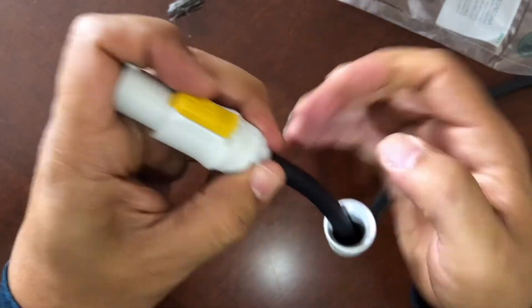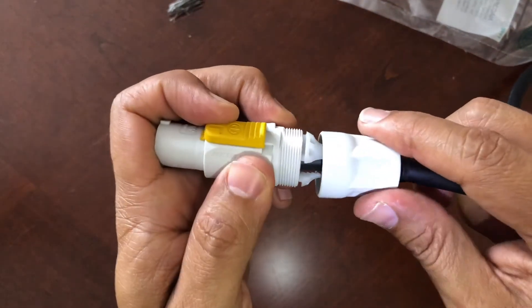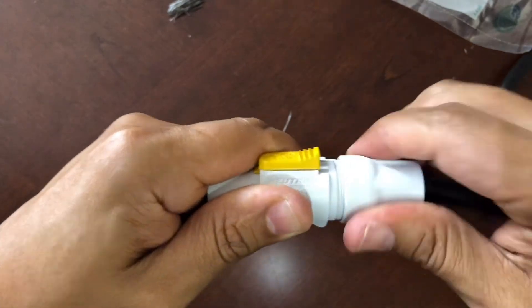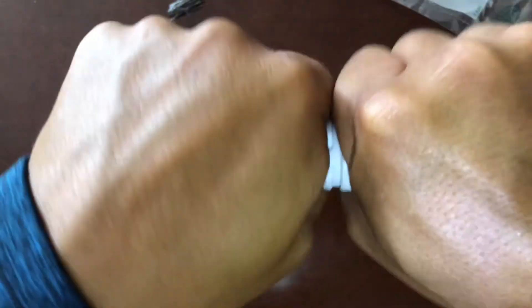Once you do that, the final step is to screw together the front and back covers and you're pretty much good to go. It will make a clicking noise—just keep doing it until it doesn't click anymore and the cable is ready.